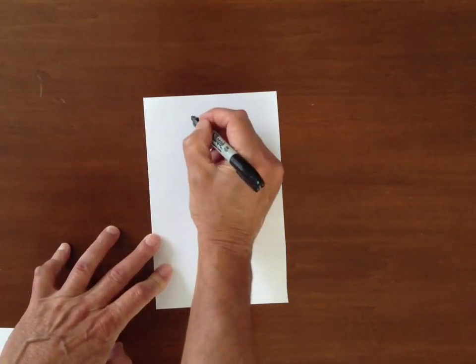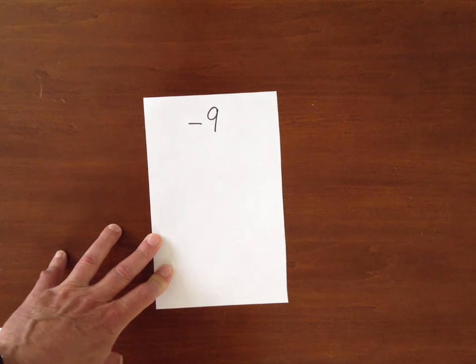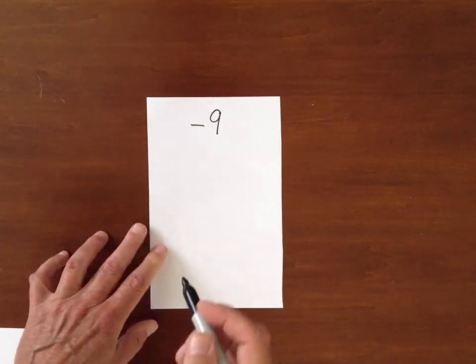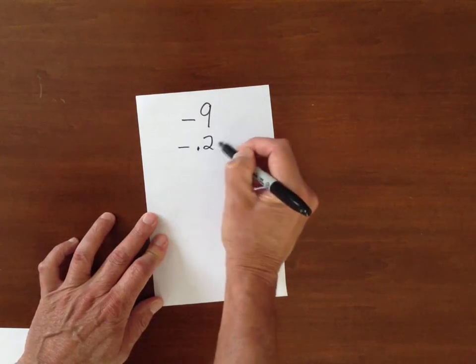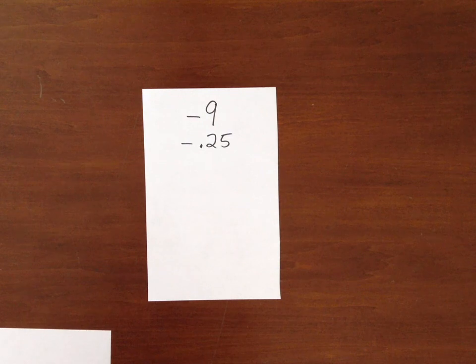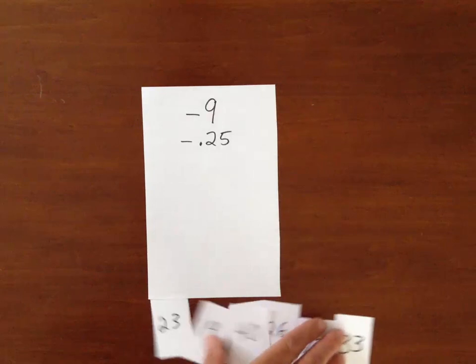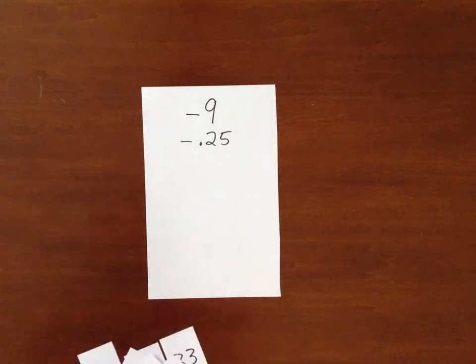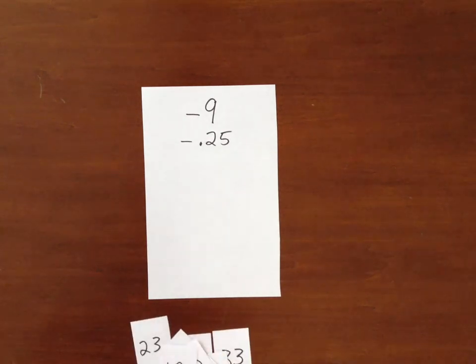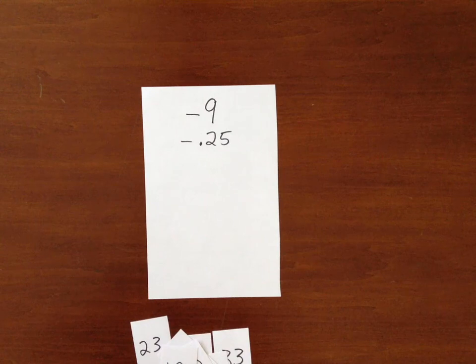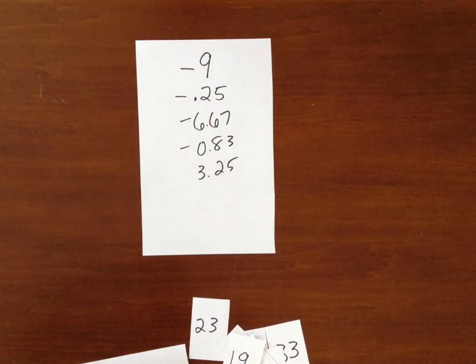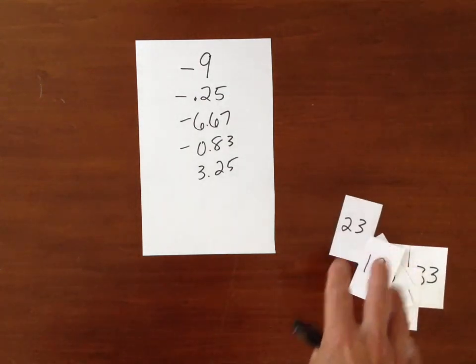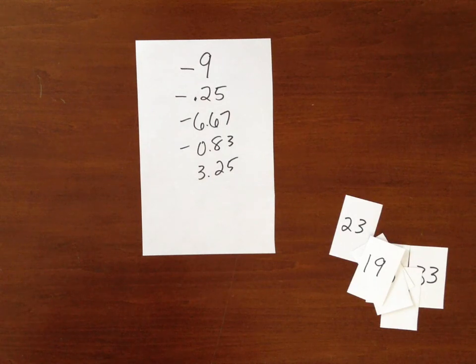We have these scores - here we have a treatment group mean of 26.75 and a control group mean of 27 for a difference of negative .25. What I need to do is keep track of these differences. So the very first time I did this, we had a difference of negative nine - that was the observed scores of actually having done the experiment. Now the first time I did this reshuffling, we had a difference of only negative .25.